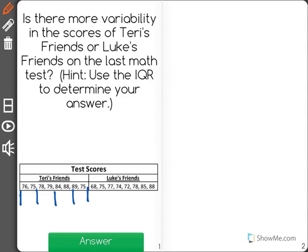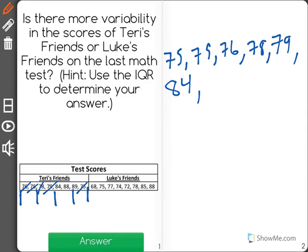Let's start with Terry's friends. The lowest value I see is 75, then another 75, 76, 78, 79, 84, 88, and 89.